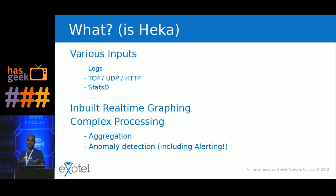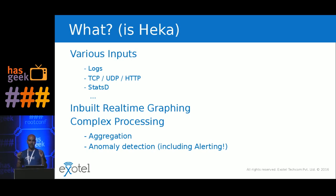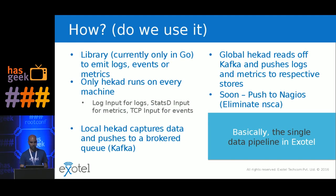HECA has alerting as well. Because it is such a generic data stream processing tool, when an anomaly is detected, a message goes back into the message router saying anomaly detected. There is a filter that says if an anomaly message comes, the output should be SMTP — so it goes over email to you — or you can send out an SMS or a call. That's what HECA is.